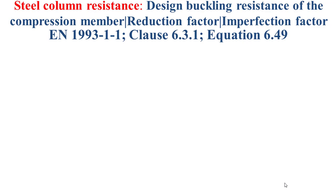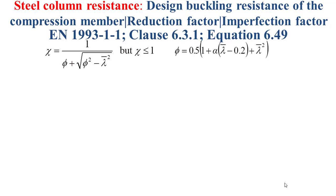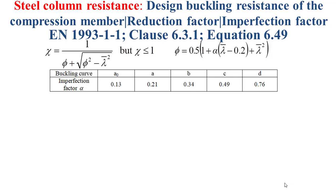The reduction factor chi is determined based on the Eurocode 3 standards EN 1993, using the formula shown in this slide. To determine chi, we must first determine phi and the slenderness lambda-bar. Phi is determined by the formula shown on the right of this slide, as a function of the imperfection factor alpha and the slenderness lambda-bar.